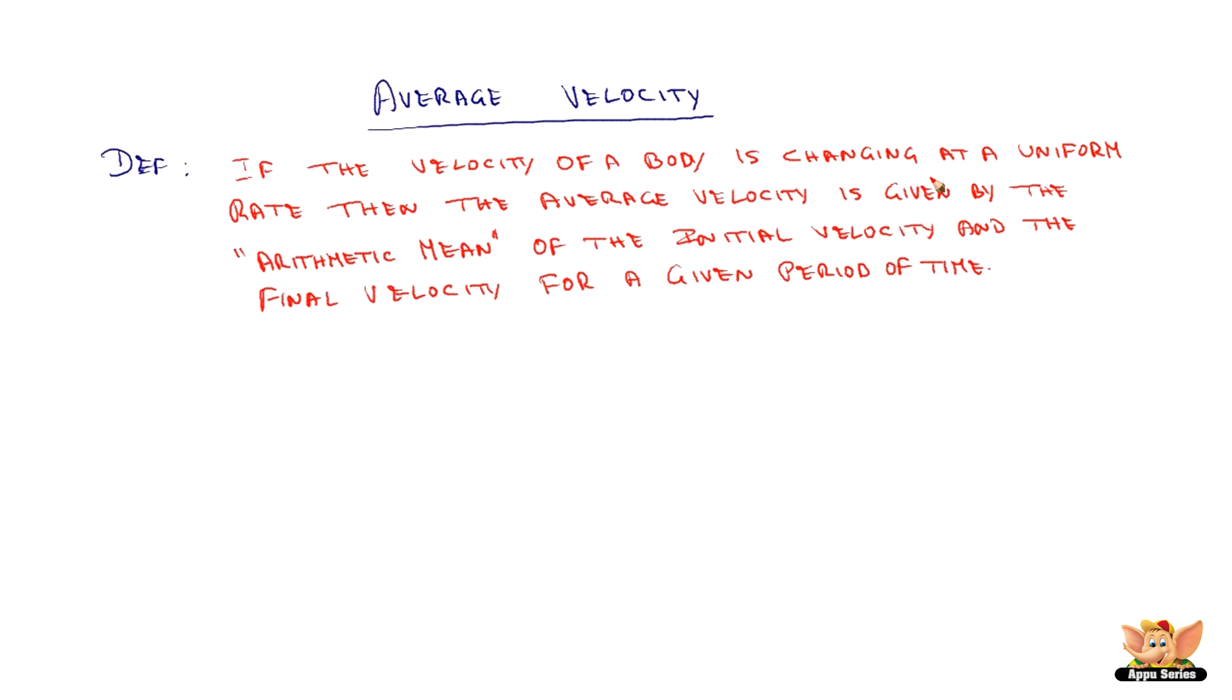If the velocity of a body is changing at a uniform rate, then the average velocity is given by the arithmetic mean of the initial velocity and the final velocity for a given period of time.